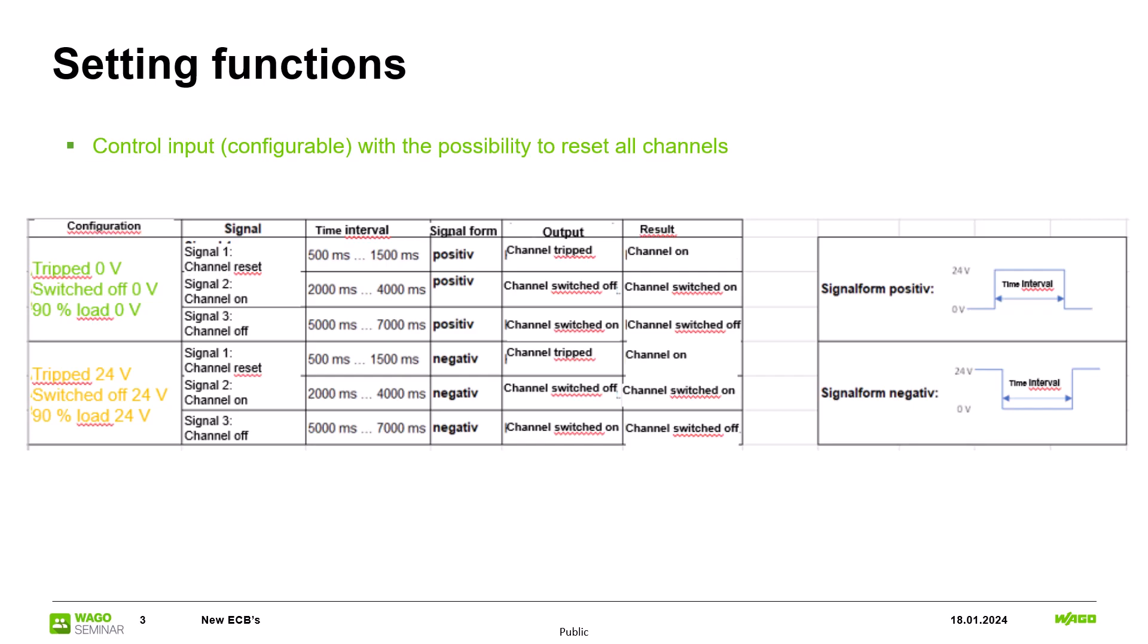If the input signal is between 500ms and 1500ms all channels will reset. Between 2000 and 4000ms all channels are switched on and between 5000 and 7000ms all channels are switched off. These circuit breakers cannot be used to switch individual channels on or off.